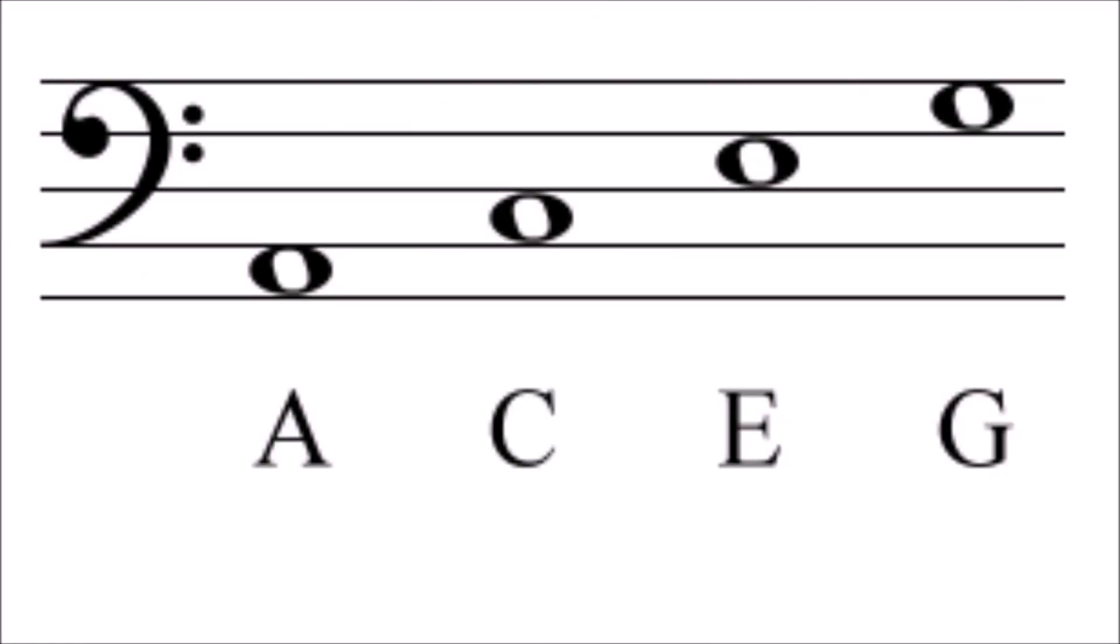Bass clef spaces: A, C, E, G. The names of the notes on the spaces of the bass clef are as follows. The first space from the bottom is named A. The second space is named C. The third space is named E. And the fourth space is named G.